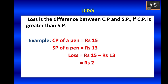Next, for loss: I am going to buy the same pen for rupees 15 and sell the pen for rupees 13, which is rupees 2 less than the cost price. Here I am getting a loss because cost price is greater than selling price. So rupees 15 minus 13 equals rupees 2 is the loss when you buy a pen for rupees 15 and sell it for rupees 13.